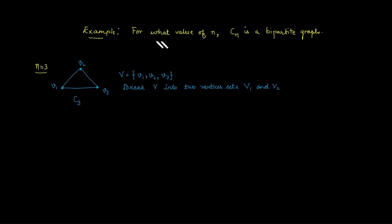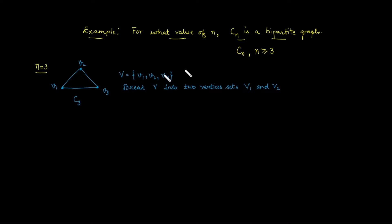Example: for what value of n is Cn a bipartite graph? It is important to know that cycle Cn is defined for n greater than or equal to 3. Consider the first case when n equals 3, meaning C3 has 3 vertices.